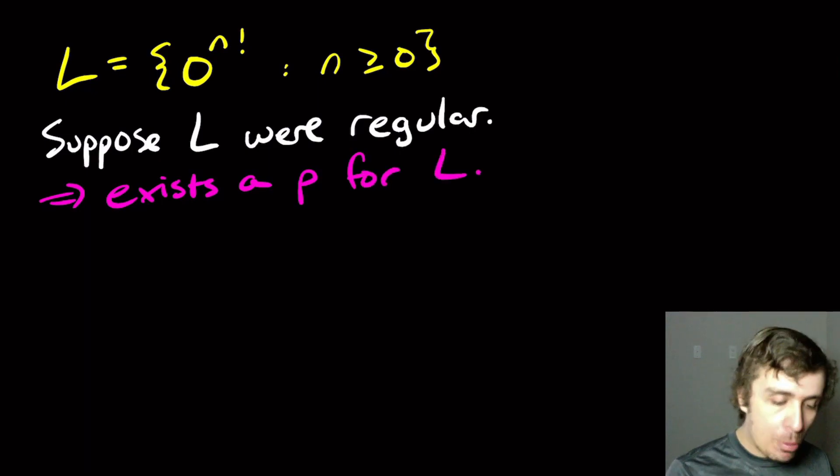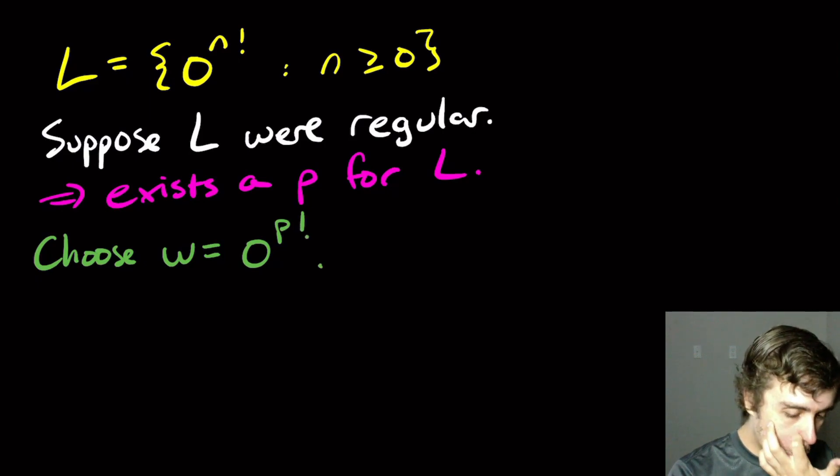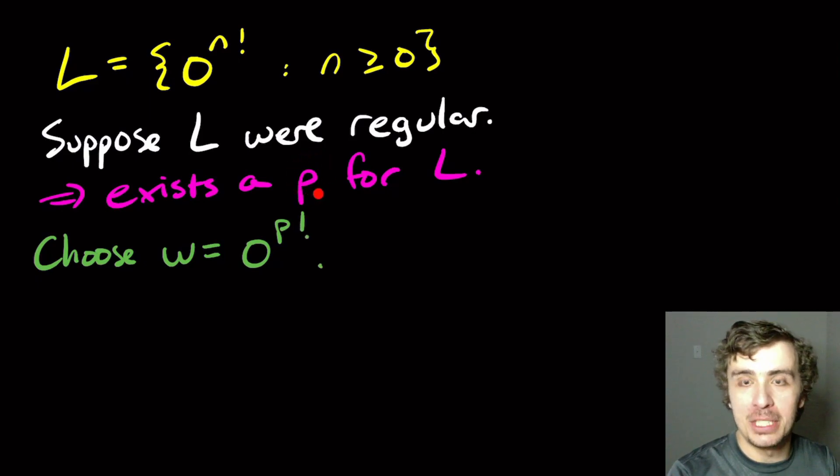Okay, so then now we want to pick a string that's in the language and has length at least P. Well, that's no problem. So let's choose W to be equal to zero to the P factorial. So commonly the technique is to substitute the P for the exponent, the n, not the whole exponent, the n part.